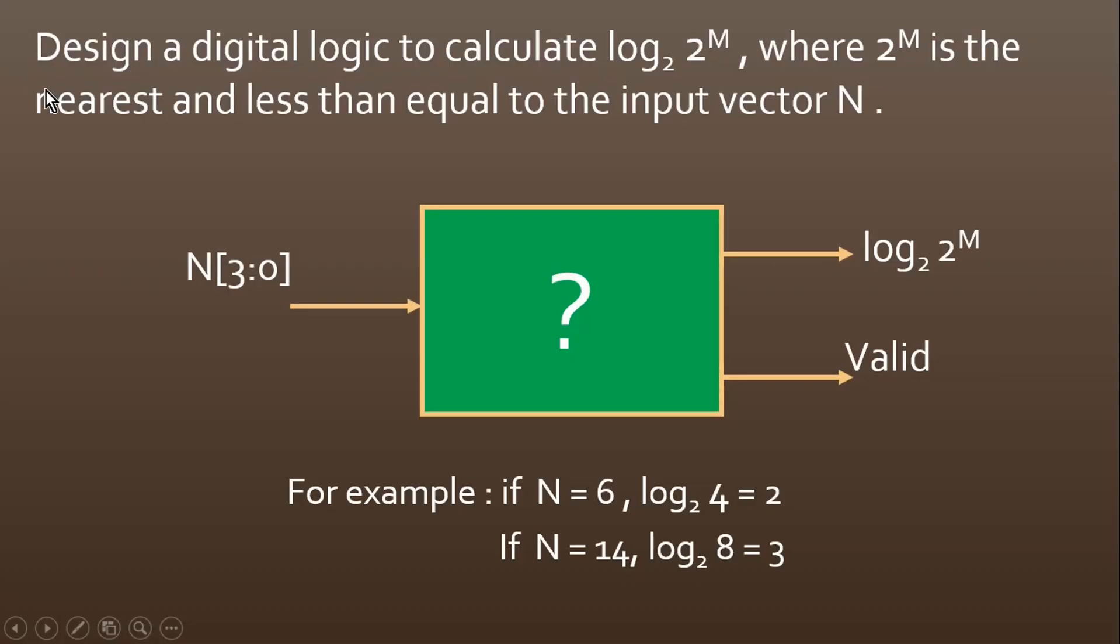The question is on your screen where you have to design this digital logic. It has N as an input and log₂ raised to power m as an output along with the valid flag. When valid is high, then only output will be considered valid. We understand that we are giving N as an input, but what is this 2 raised to power m here? Let me read the question for you.